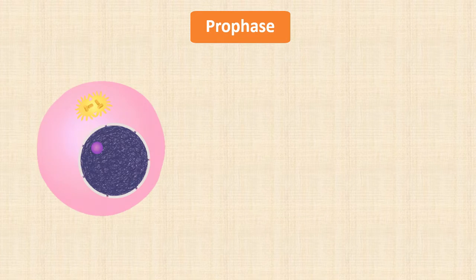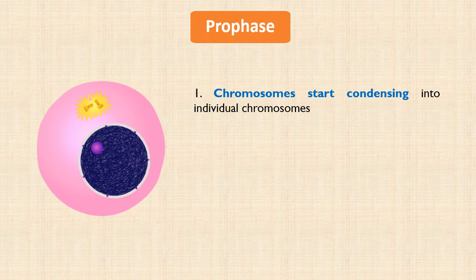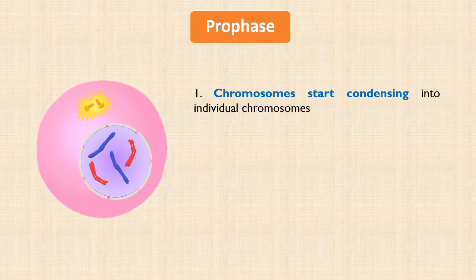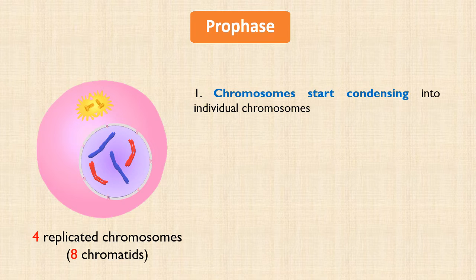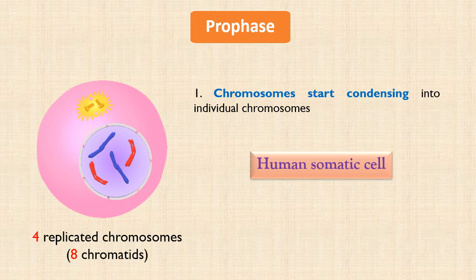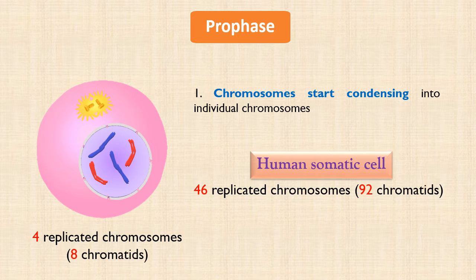The first phase of mitosis is prophase. Recall that chromosomes are invisible or indistinguishable during interphase. Prophase is characterized by two main events. First, in prophase, the chromosomes start condensing into individual chromosomes. Recall that chromosomes are already duplicated. Here, for our illustration, we are showing only four replicated chromosomes, meaning a total of eight chromatids. But in humans, the somatic cell undergoing mitosis will have 46 replicated chromosomes, that means 92 chromatids. Note that I have used two different colors to represent chromosomes, indicating that two chromosomes have been inherited from the mother and two from the father.